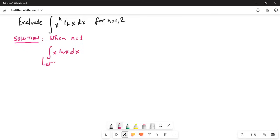Let u equal ln of x. Then du is 1 over x dx. And let dv equal x dx. So, by integration, v is equal to x squared by 2.